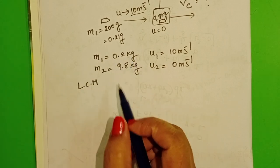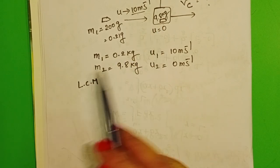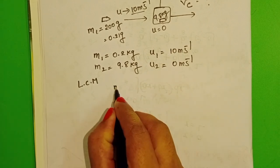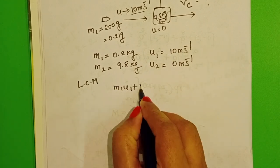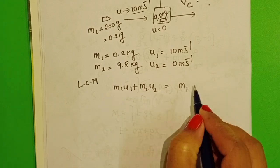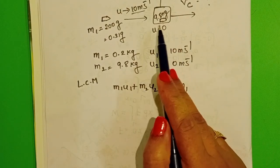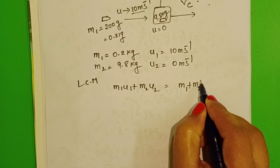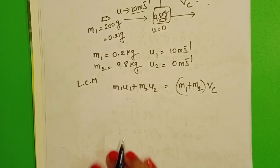We know the law of conservation of momentum. Total momentum before collision is equals to total momentum after collision. M1 U1 plus M2 U2 equals M1 V1 plus M2 V2. But after then, these two bodies move with common velocity, so take M1 plus M2 into Vc.